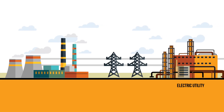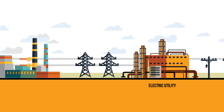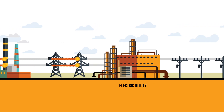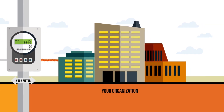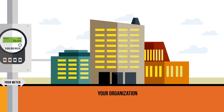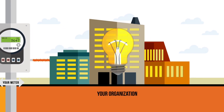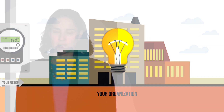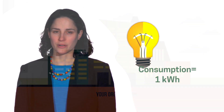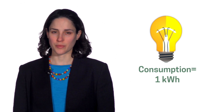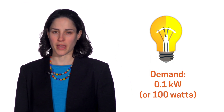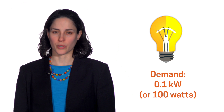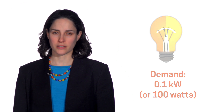The utility must be ready to deliver that 0.1 kilowatts of electricity whenever that bulb is switched on. In this single bulb scenario, our light is on for 10 hours. Our consumption is 1 kilowatt hour of energy, yet our demand remains constant at 0.1 kilowatts.